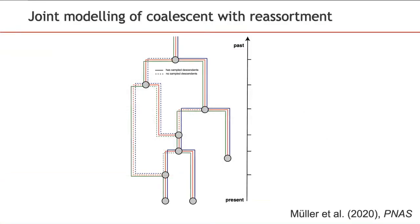In order to infer such networks, we need an evolutionary model. We have extended the Kingman's coalescent process for trees to include reassortment of viral lineages. In this phylogenetic network model, ancestral lineages carry genomic segments, here shown in three colors, of which only a subset may be ancestral to sampled viral genomes. These are depicted in solid lines, which show the embedded trees of the segments.